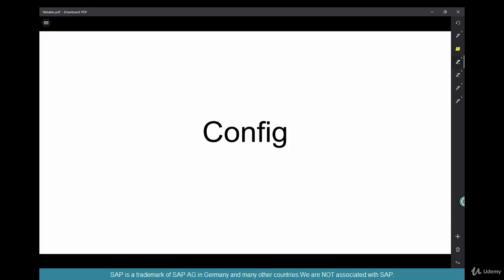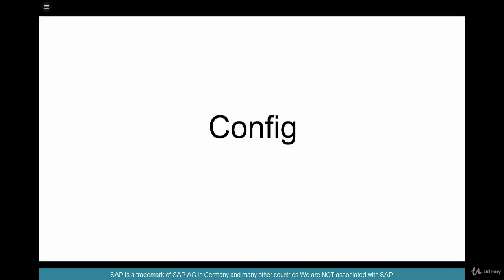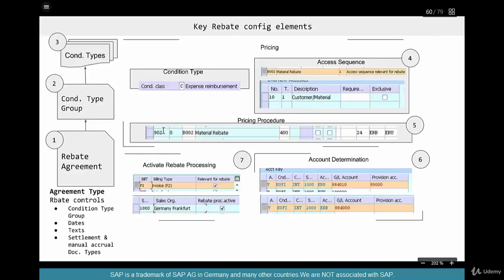Let's start with the configuration. We have seen what rebates are, we have created a rebate in the system using the standard rebate agreement type, standard rebate conditions BO01 and BO02. We have seen how accumulation happens behind the scenes in the S060 LIS table, we have seen manual accruals, partial settlements, final settlements — basically the entire rebate cycle. So now let's create our own custom rebate agreement and custom condition type for rebates.